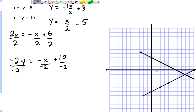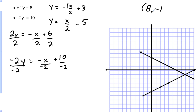We need to write our solution. The intersection is 8 units over in x and negative 1 in y, so our solution is the point (8, −1). That's our solution to that system of equations.